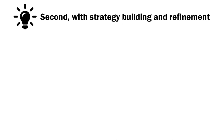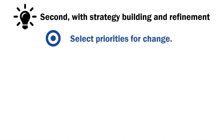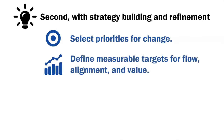We then help clients with building and refining an ALM strategy. First, what are the priorities for change — where can you get the most out of your investment for increasing the flow of value or alignment? Based on our experience working with clients and our research, we can help develop measurable targets for the important parts of ALM: flow, alignment, and value. Picking the right metrics is a very important part of any strategy — you want enough information to make adjustments, but not so much that it becomes counterproductive.